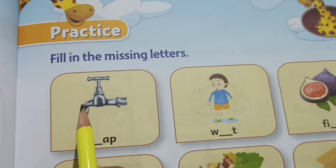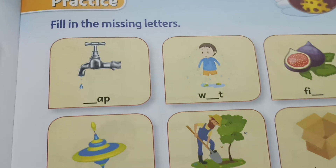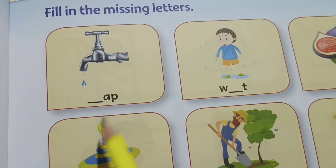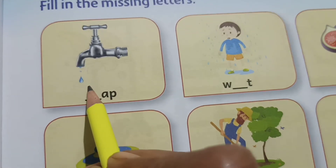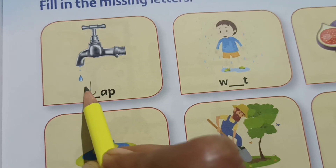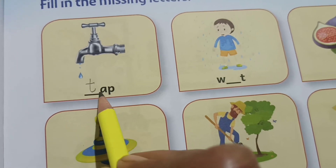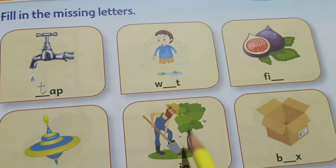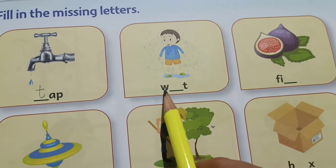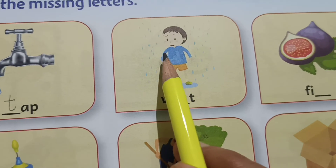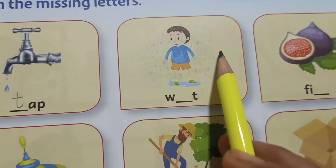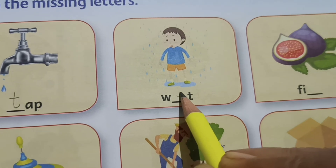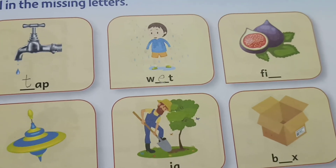Fill in the missing letters. Same as before. What is it? Tap. T, a, p — tap. So, here are the boys. Can you see the boys are wet here, in the rain? W, e, t — wet.